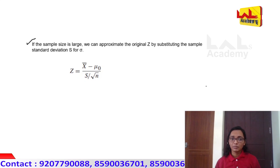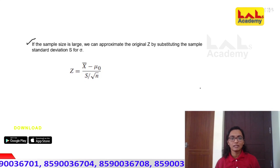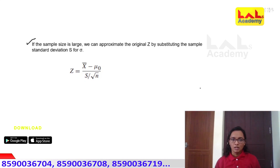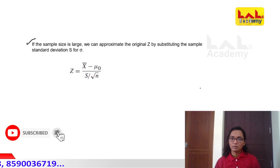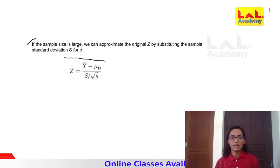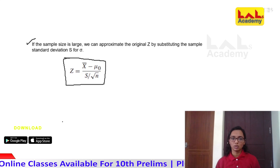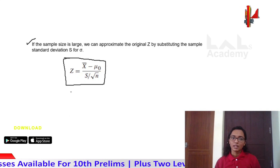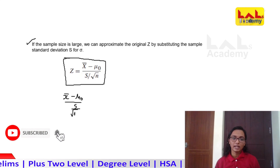If the sample size is large, we can approximate the original z by substituting the sample standard deviation s for sigma. In this case, when we have a large sample size but the population standard deviation is unknown, we use the sample standard deviation s. The test statistic becomes z equal to x-bar minus mu-zero divided by s divided by root n.